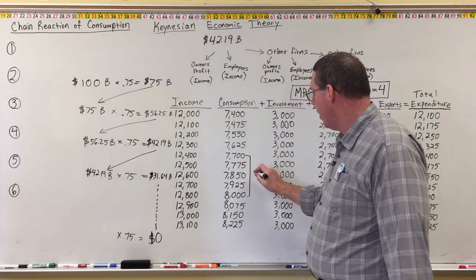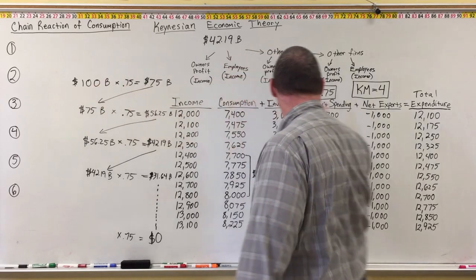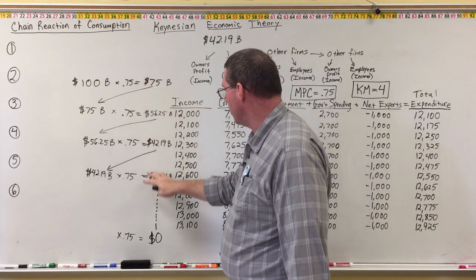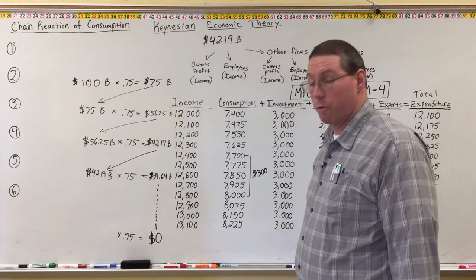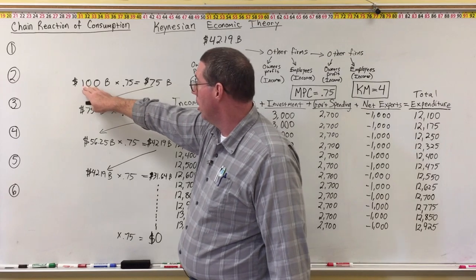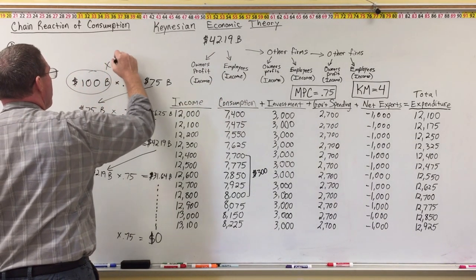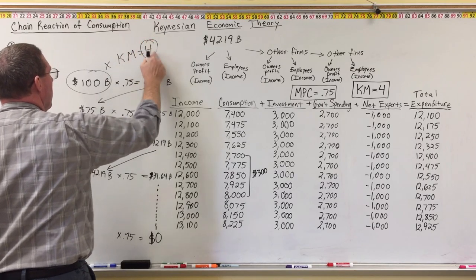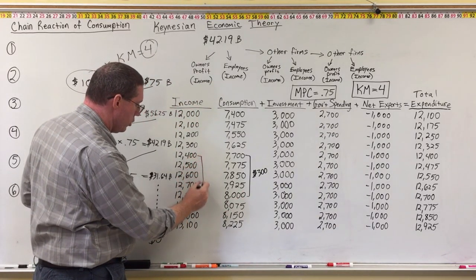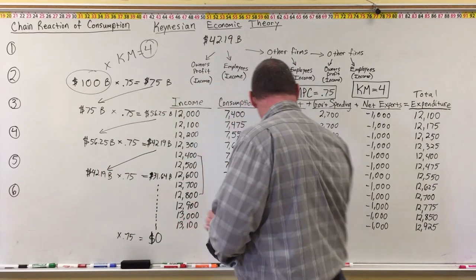When we add up all of the chain reaction of spending, after the initial injection from government spending of $100 billion, this chain reaction of spending is going to total $300 billion. And then $300 billion plus the $100 billion initial injection of government spending equals $400 billion — which is equal to the initial injection times the Keynesian multiplier of four. Four times $100 billion is $400 billion, and that's why we see an increase in real GDP from $12,400 up to $12,800.